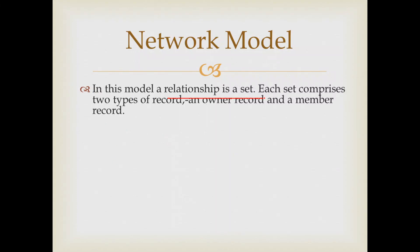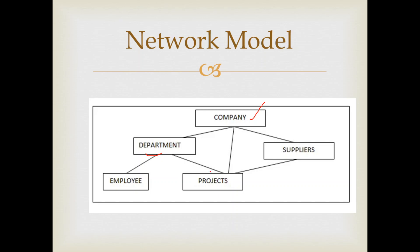In the network model, the relationship is defined as a set. Each set comprises two types of records: an owner record and a member record. For example, the relationship between department and projects has one owner record and one member record. That's why company and department have a connection.